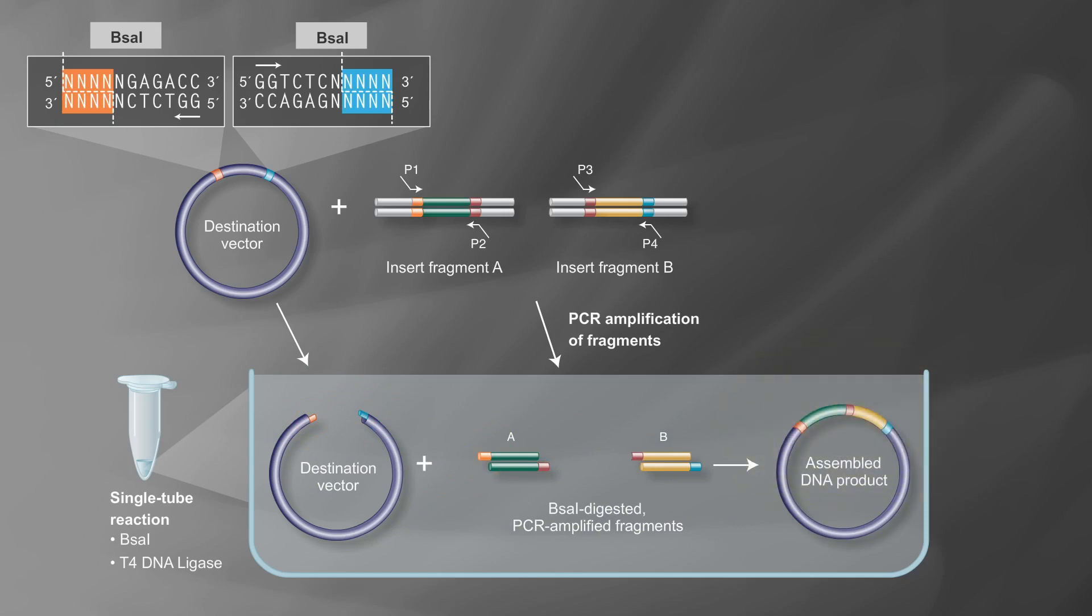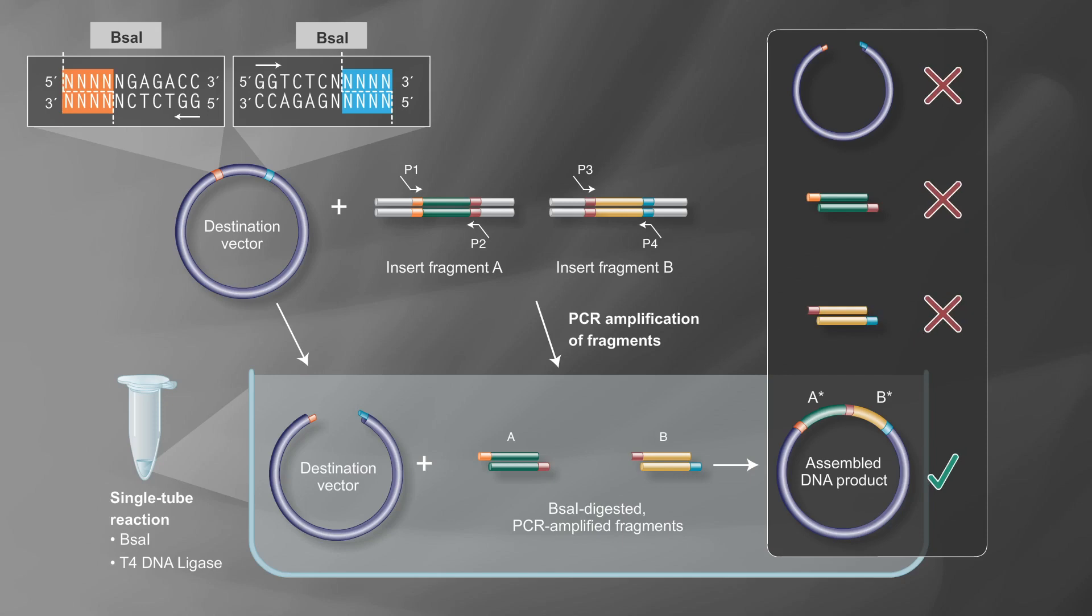A final short 55 degrees Celsius step at the end of the assembly reactions favors digestion, ensuring only linear DNA remains. Note that the correctly assembled fragments no longer contain BSA1 sites, and therefore only the plasmids with the correct insertion will remain intact and ready for the last step, which is transformation.